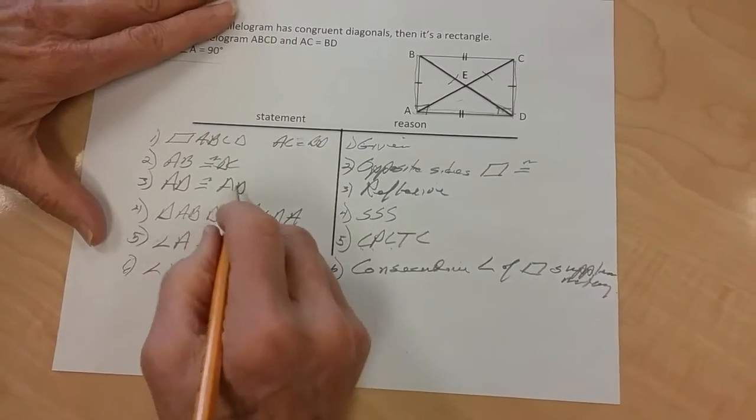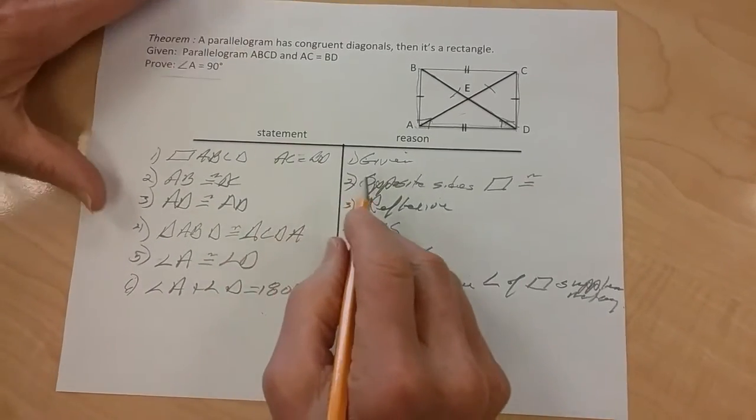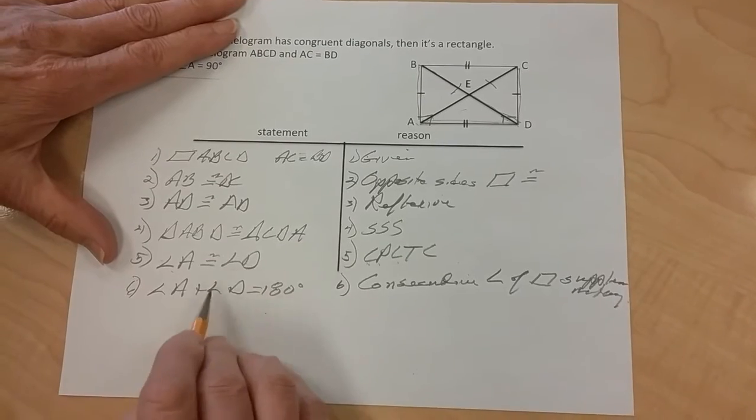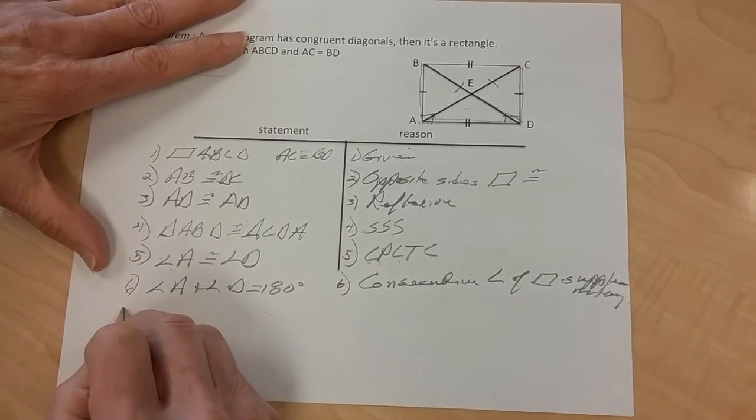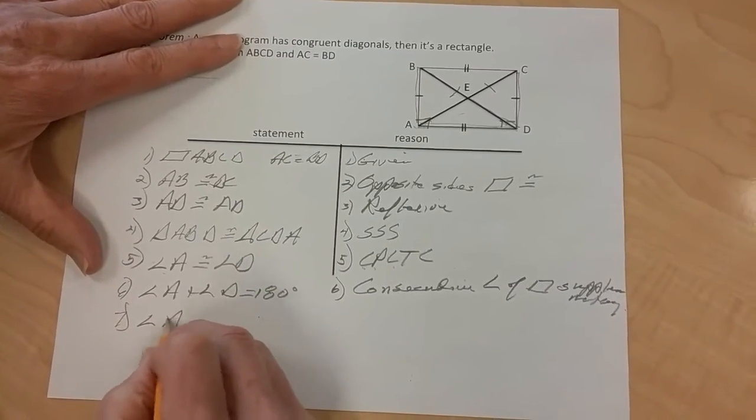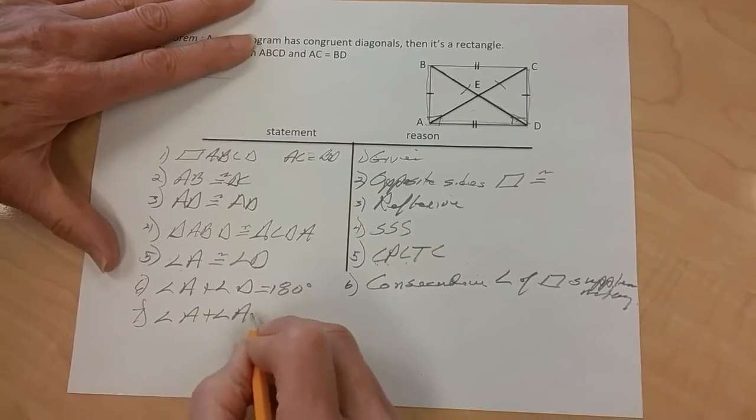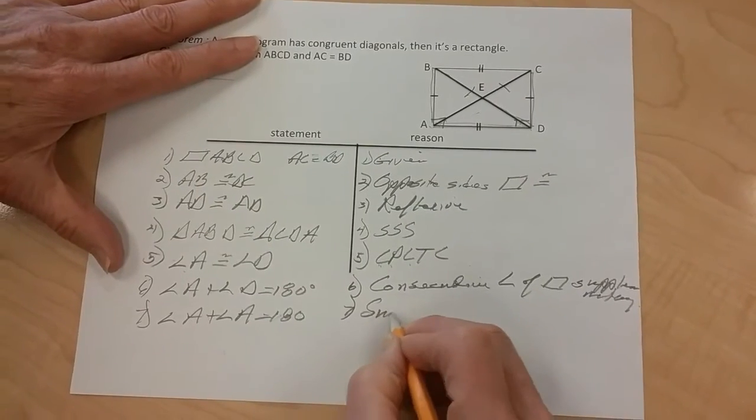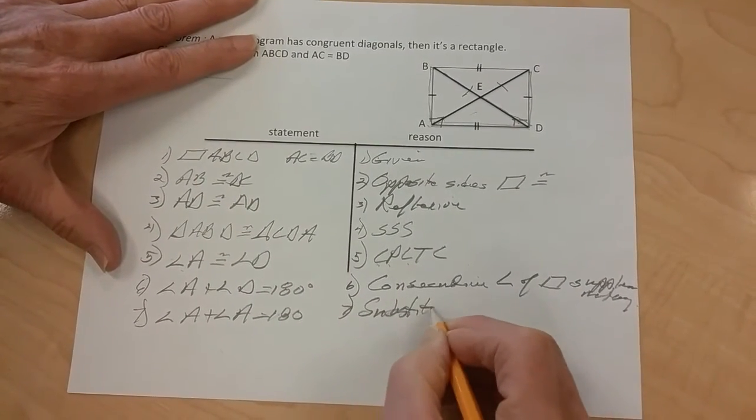Now, if I substitute, I substitute in here D for A, so I end up with 7. So I've got angle A plus angle A equals 180 degrees, and that's 7 by substitution.